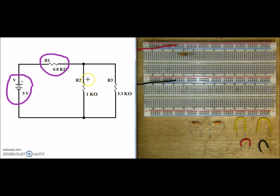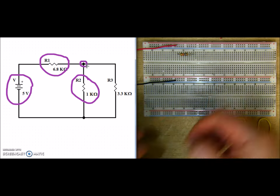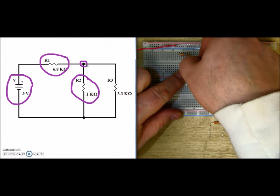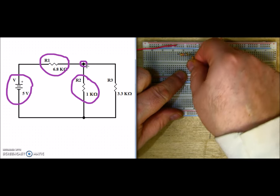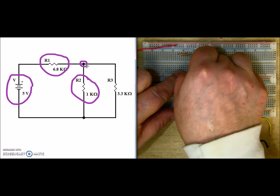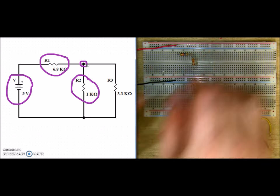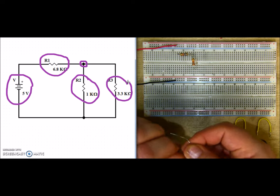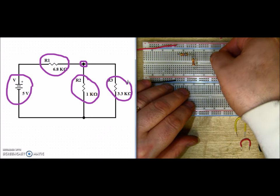Now I'm going to put R2 in. Since these two combine at this node, I'm going to take R2 and put it in the same column as the other terminal of R1. And then I'm going to put in R3 which is in parallel.